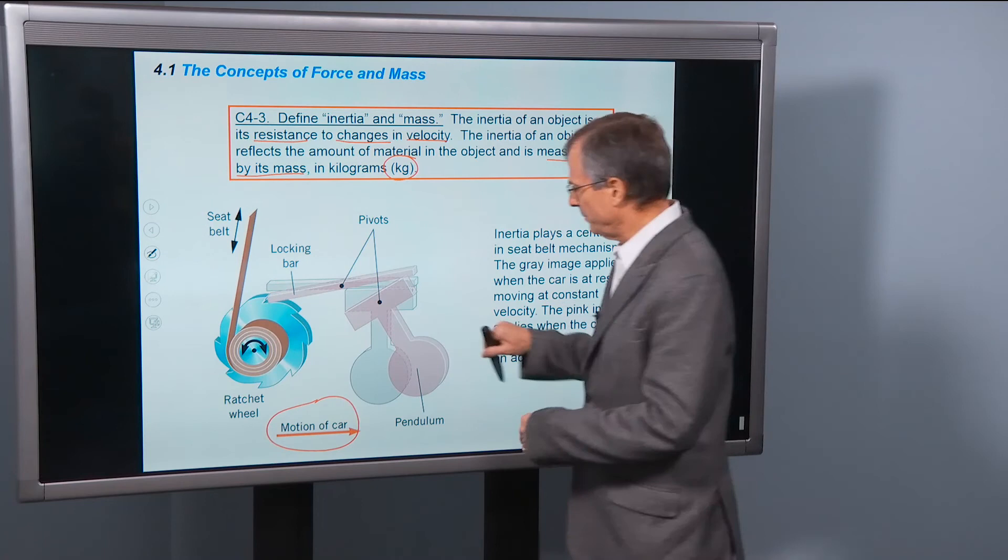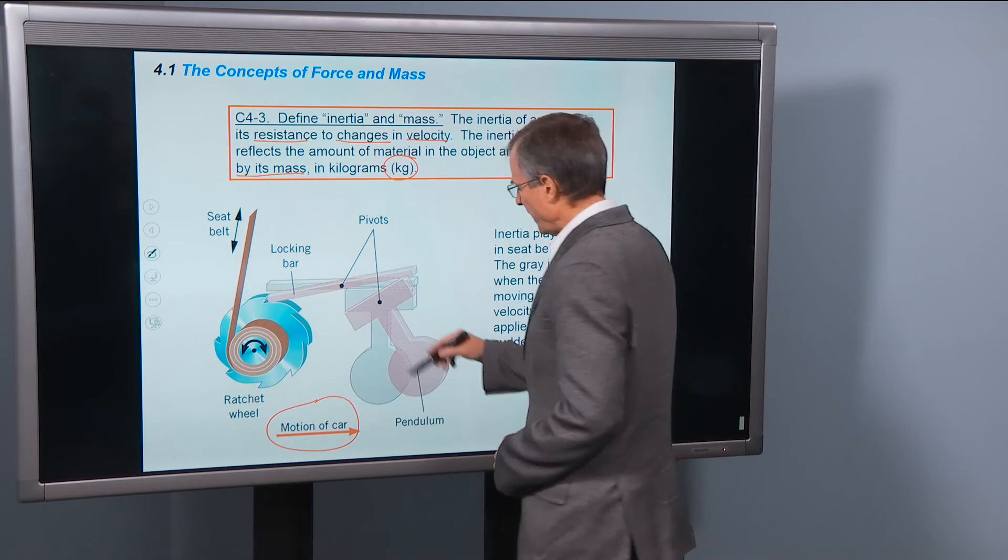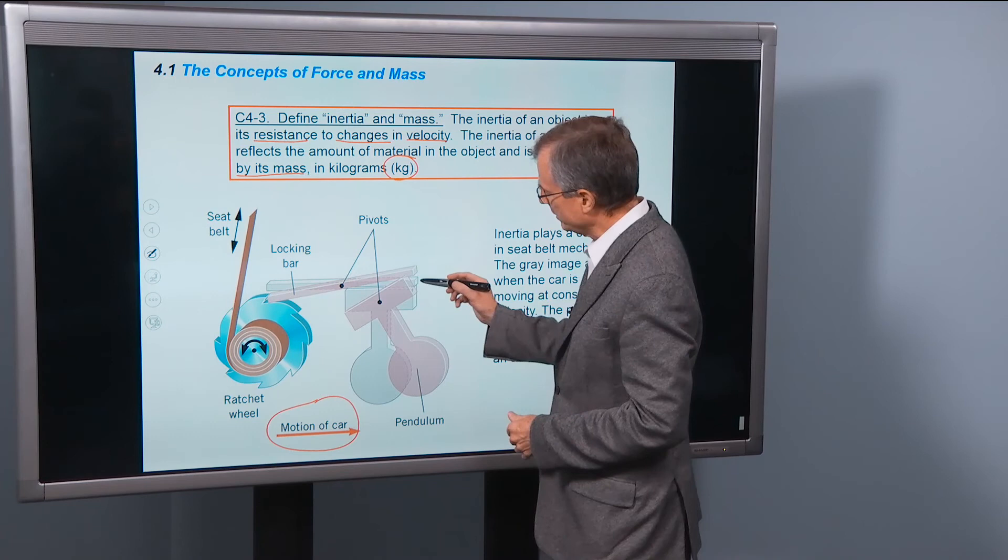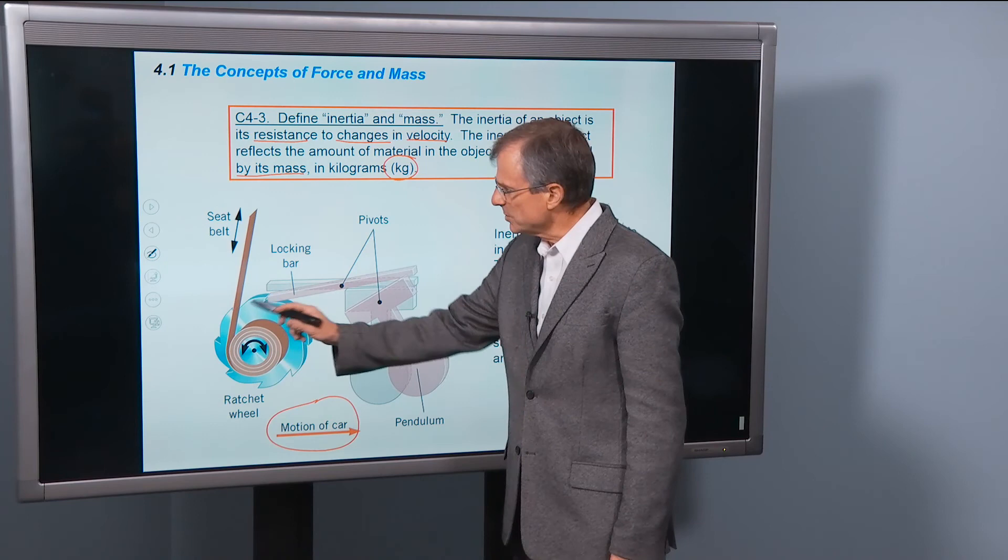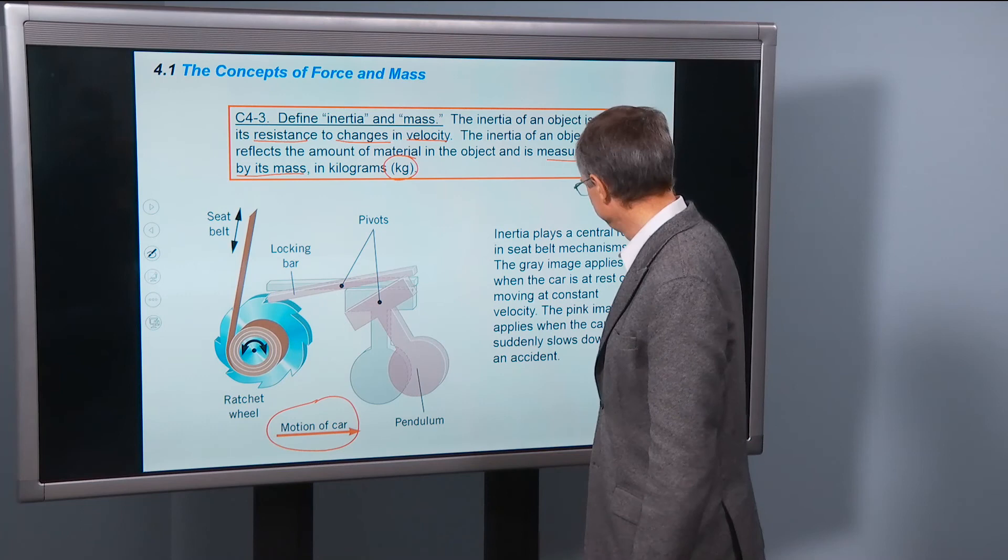When you slam on the brakes, if you're moving in this direction and you slam on the brakes, then everything is going to want to kind of go forward. And so this pendulum swings forward, and it trips this locking bar, raises it on one side, and lowers it on the other side. And that locks with the ratchet wheel on the seat belt. Pretty cool, huh?